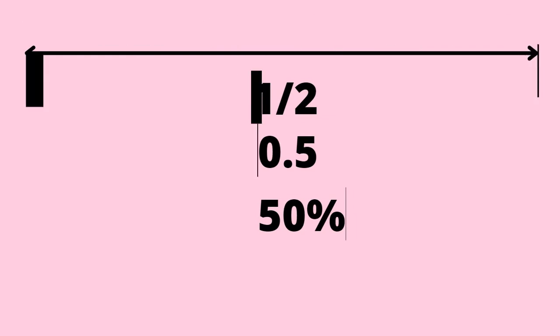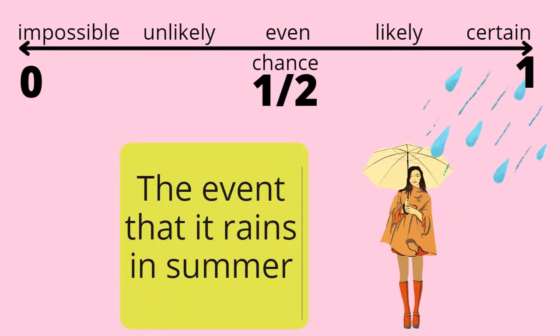Let us have some exercises. Let us describe the likelihood of an event. Say, for example, the event that it rains in summer. That is unlikely to happen.